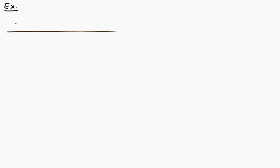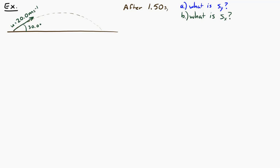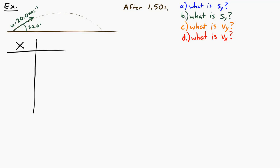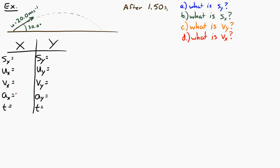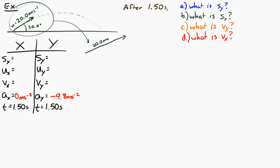Let's look at a second example. An object is launched at 20 meters per second at 30 degrees above horizontal. After 1.5 seconds, what's the vertical displacement, horizontal displacement, vertical velocity, and horizontal velocity? We organize information the same way — horizontal SUVAT on one side, vertical SUVAT on the other. We know the accelerations and the time of 1.5 seconds. We don't directly know the initial velocities, but we can find the components from the given 20 m/s at 30 degrees.